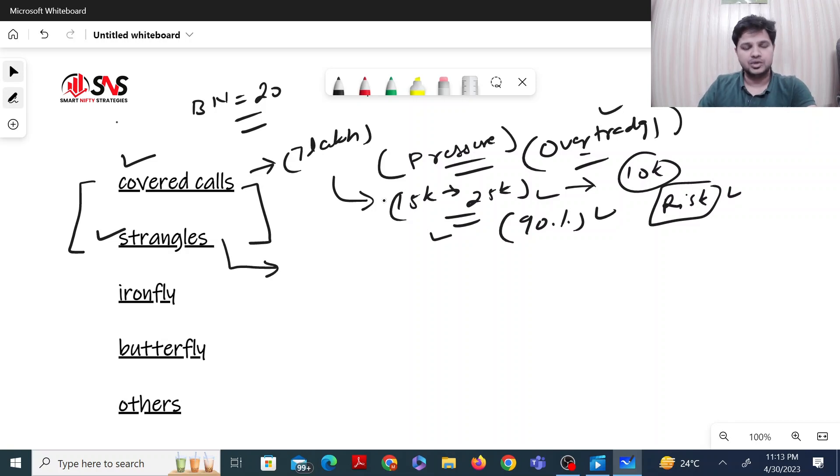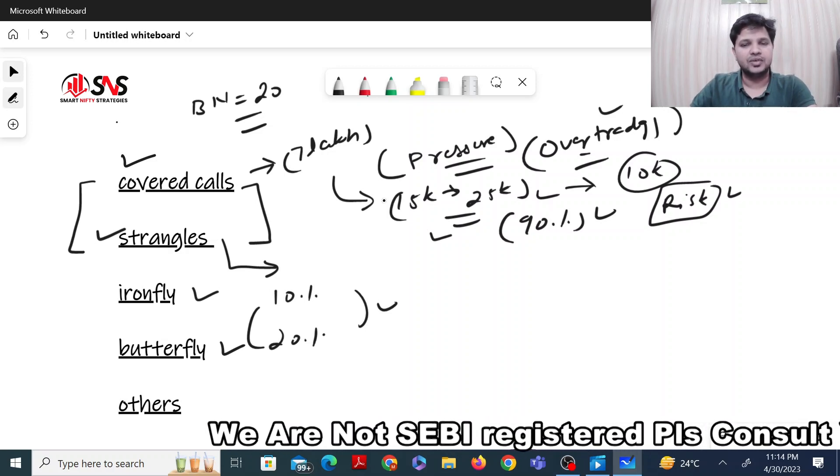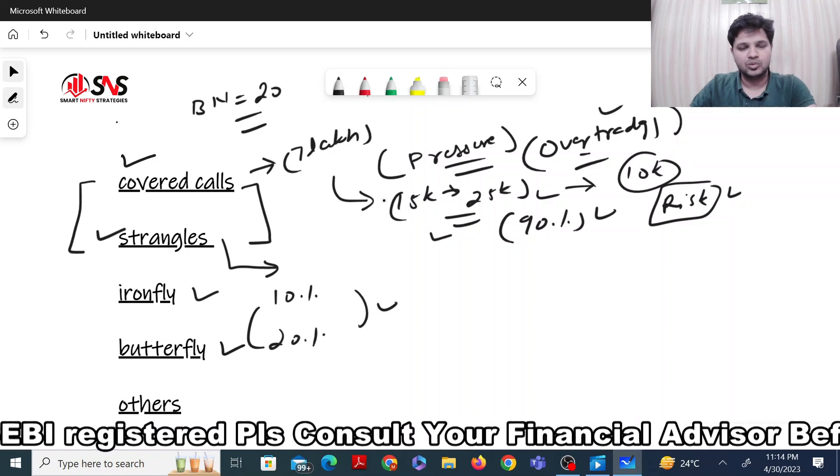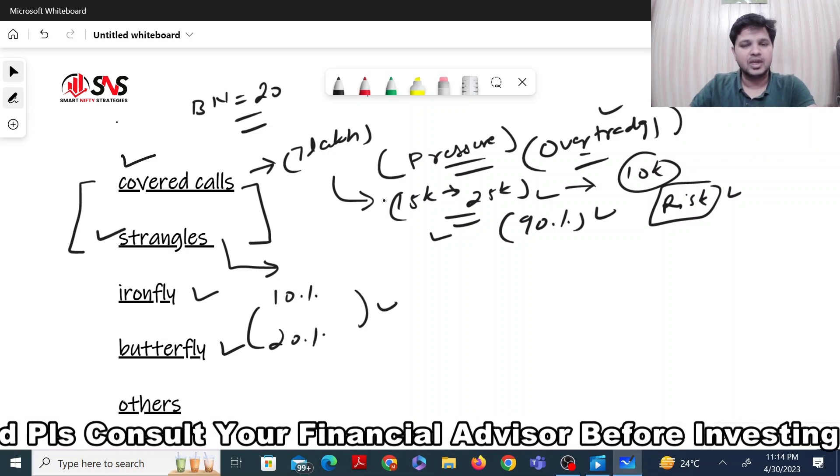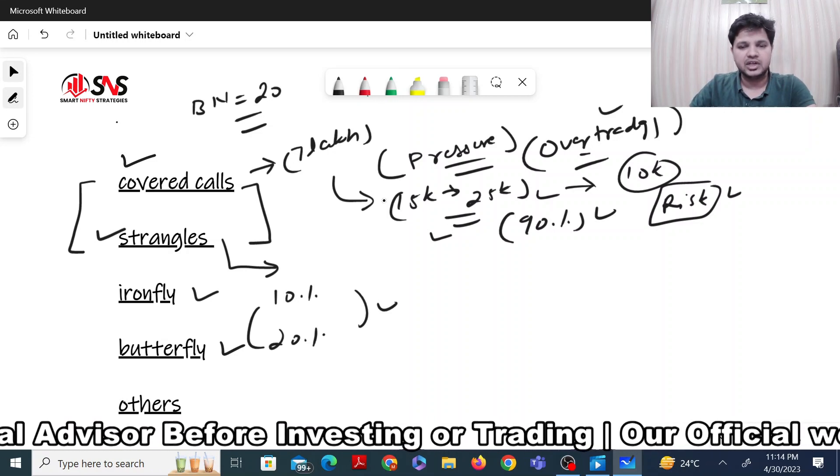I searched YouTube and found that strategies like Ironfly and Butterfly can give 10-20% returns. The good thing is that on YouTube there is so much free material available now. In the past, all this material was paid, but in today's time, having so many free resources is both good and bad.